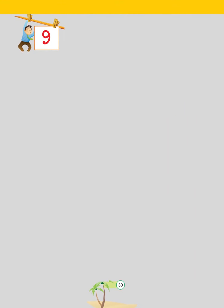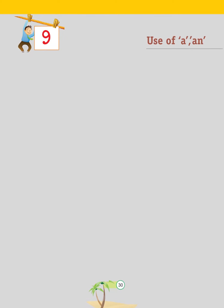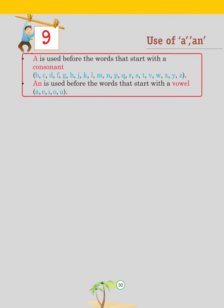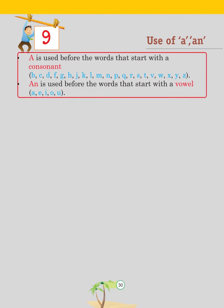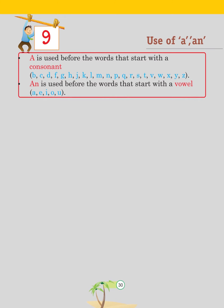Chapter 9: Use of A and AN. A is used for words that start with a consonant: B, C, D, F, G, H, J, K, L, M, N, P, Q, R, S, T, V, W, X, Y, Z. AN is used before words that start with a vowel: A, E, I, O, U.